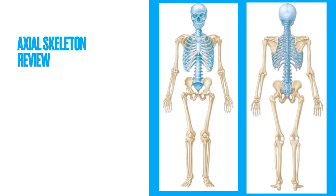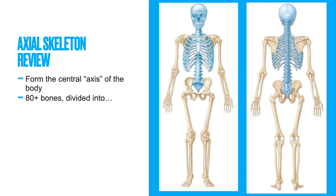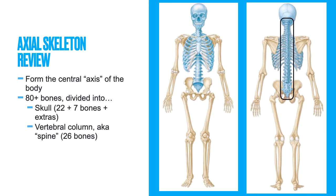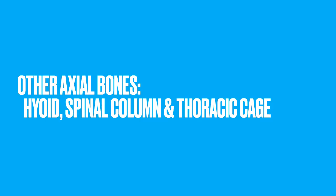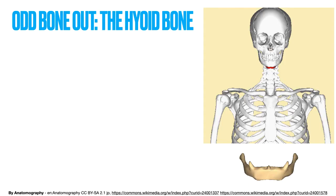Let's review the axial skeleton briefly. The axial skeleton forms the central axis of the body. It's about 80 plus bones and that includes the skull, the vertebral column, and the thoracic cage, which we also refer to as the rib cage. In this lecture we're going to focus on the other axial bones, which includes the hyoid bone, the spinal column, and the thoracic cage.